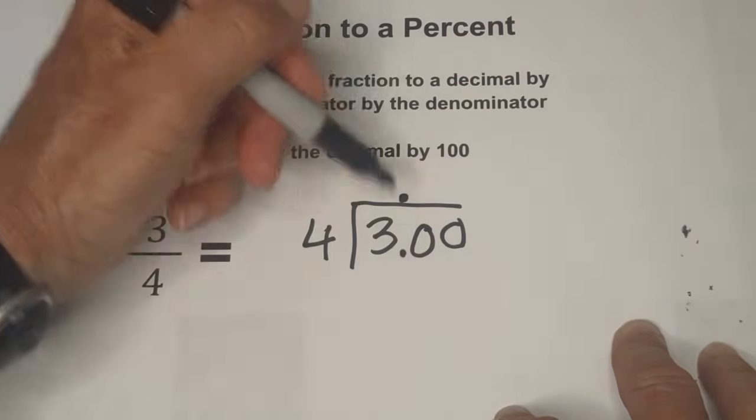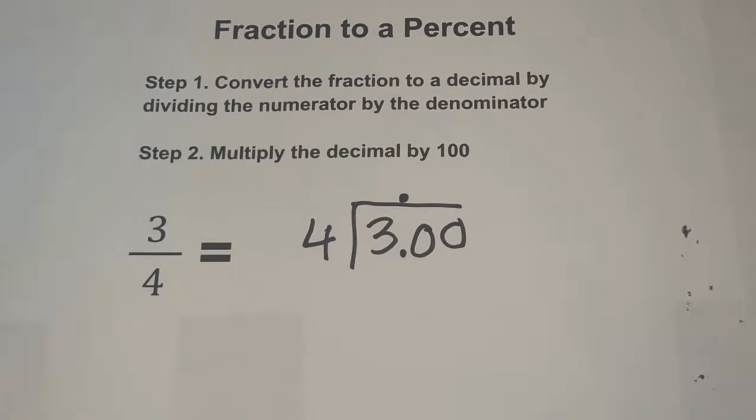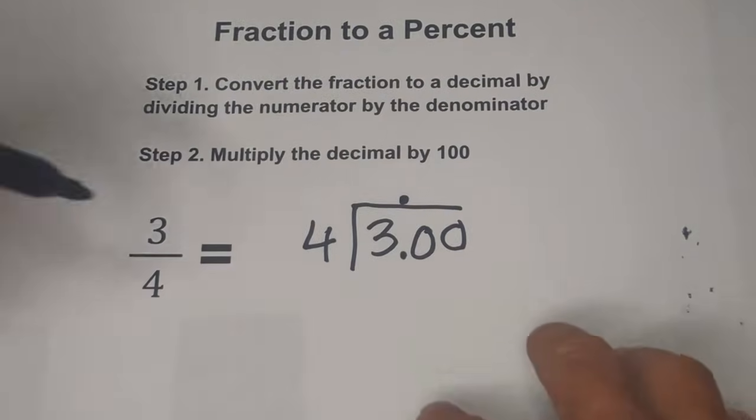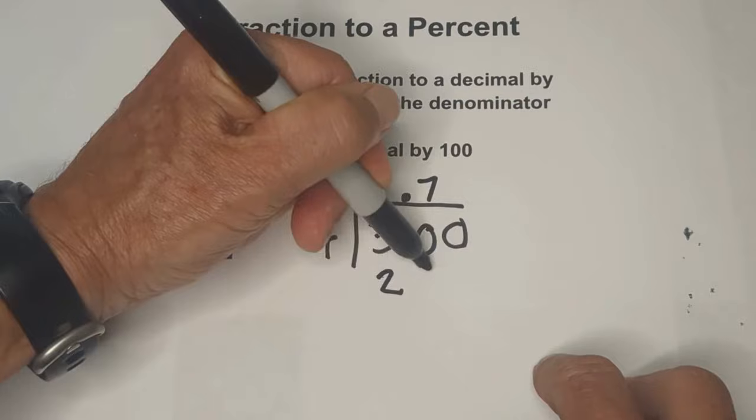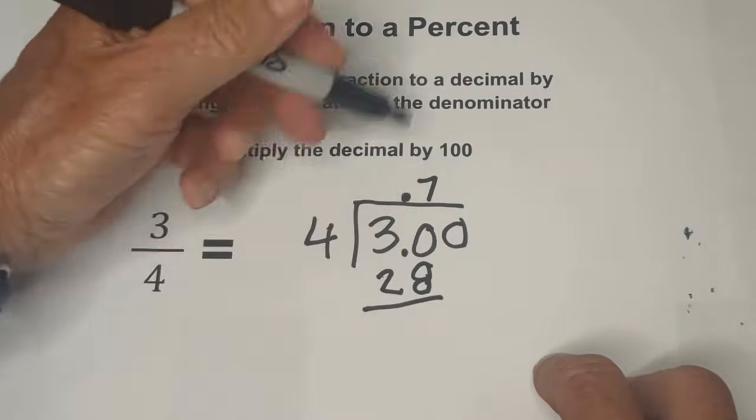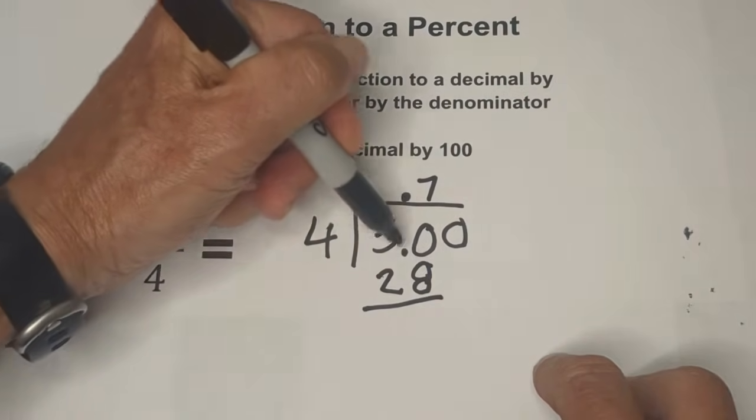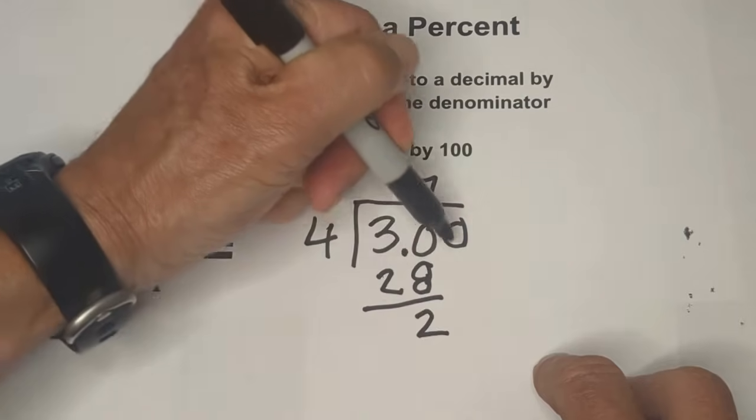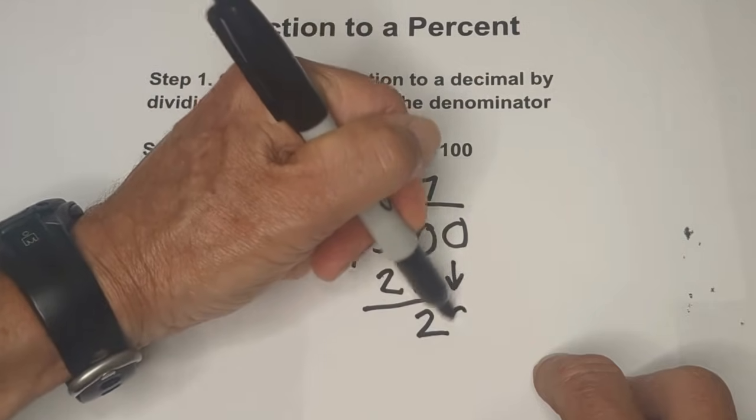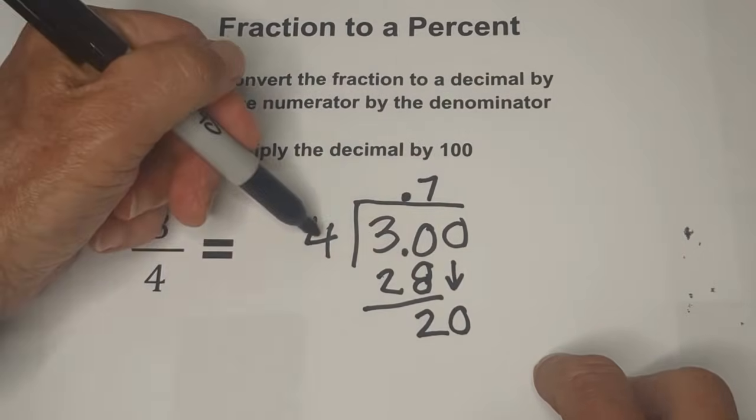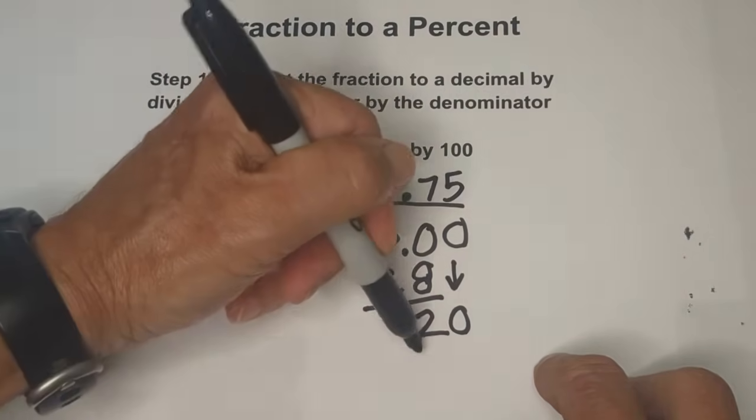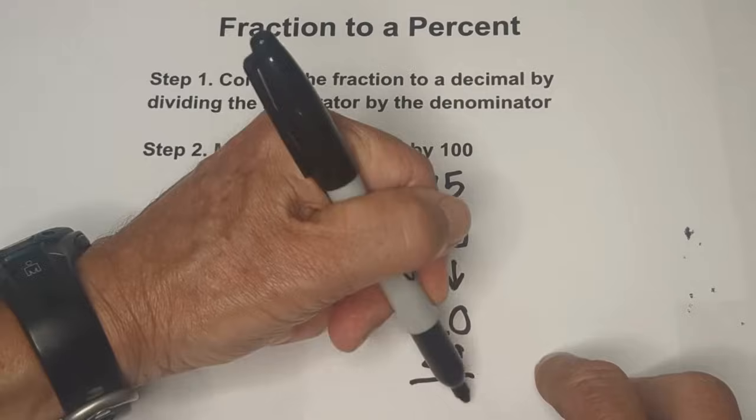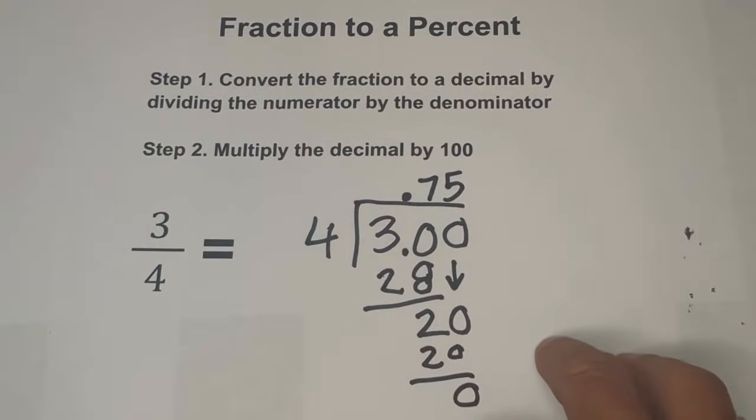So we're going to go four goes into 30. Let's see, seven times four is 28. Let's subtract. 30 minus 28 is two. Let's bring down the zero. Now four goes into twenty five times. Five times four is 20, so we have zero remaining.